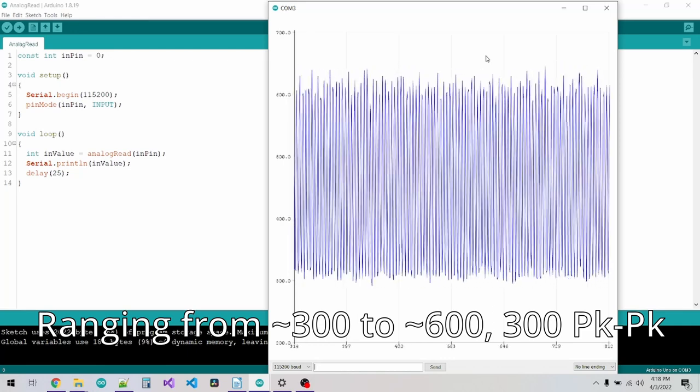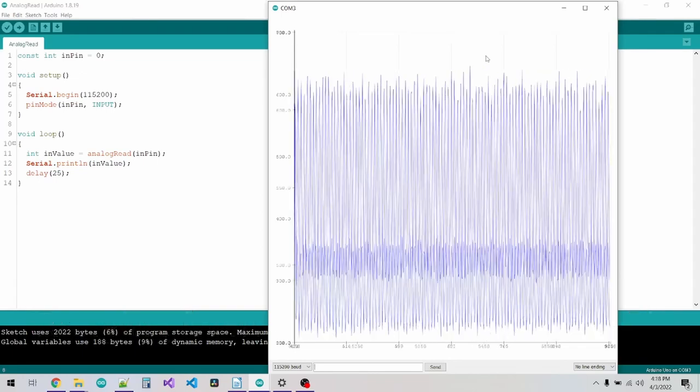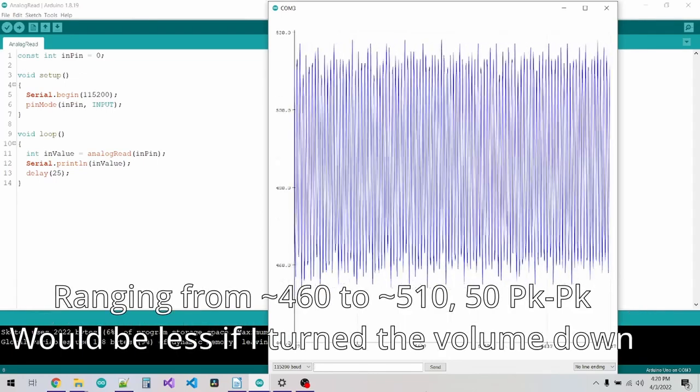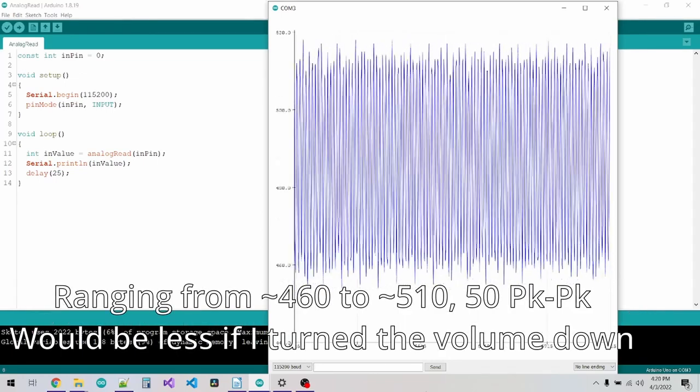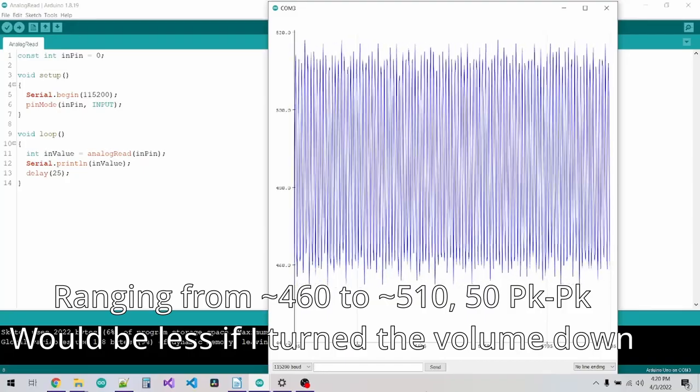A peak to peak of 100 millivolts, like we were seeing before, would barely register on the Arduino, only causing the read value to fluctuate by about 20 of its 0-1023 range.